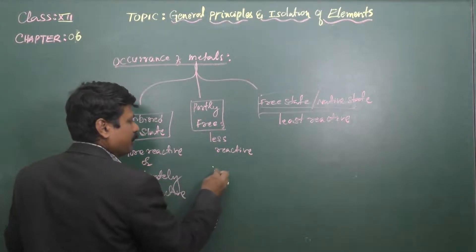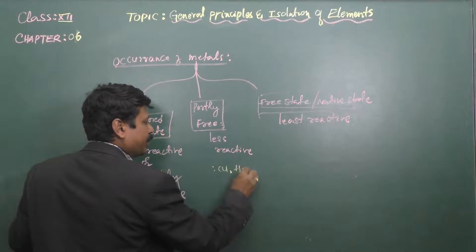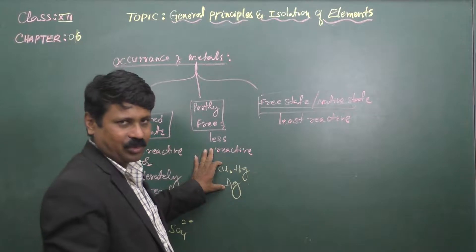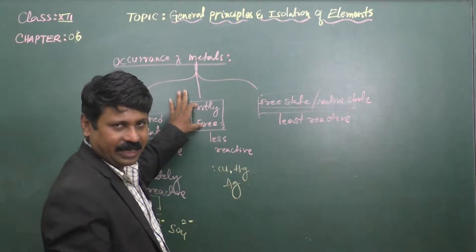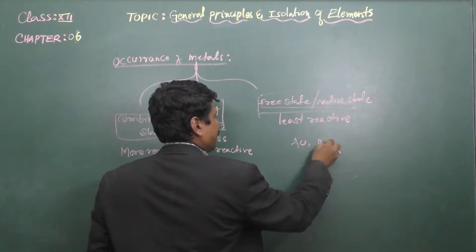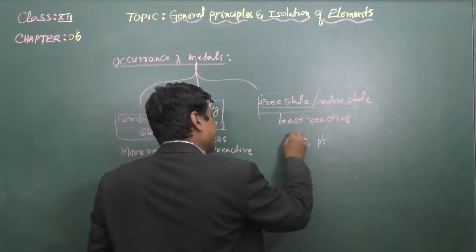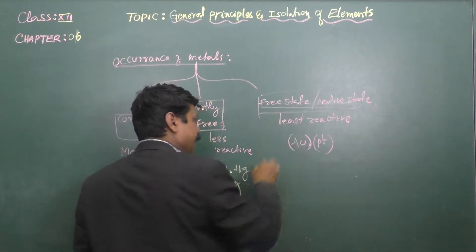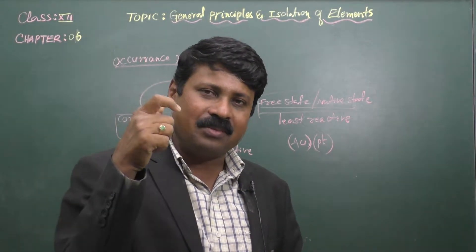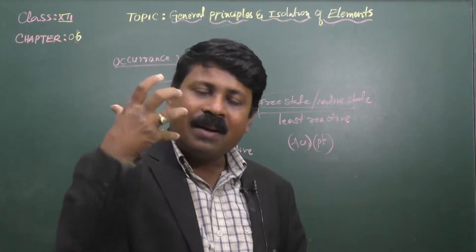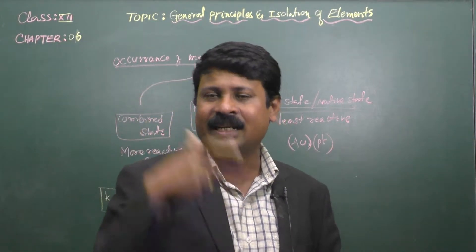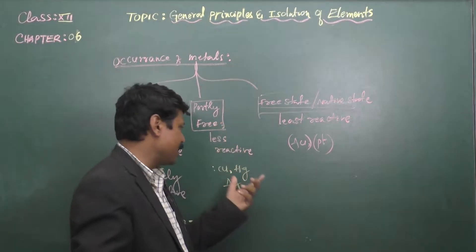Metals that are less reactive — mainly copper, mercury, and partly silver — are found to occur in partly free state. Gold and platinum are least reactive and therefore occur in the free state or native state. The amount of impurities associated with these ores is very less compared to less reactive metals.